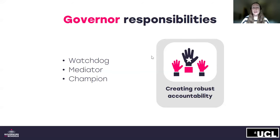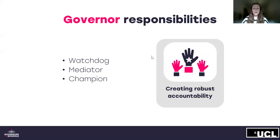As a governor, part of your role is to monitor and evaluate, and to be effective in that you need to be able to ask questions and be aware of all of the information available. Being able to support and challenge the head is one of the most key aspects of being a governor. A good example is examining progress and attainment data — you'll examine how different groups within the school are progressing, what is in place to support children with SEN, for example, or children with English as an additional language. By discussing with the board you can really understand what the data means and how it affects each child.